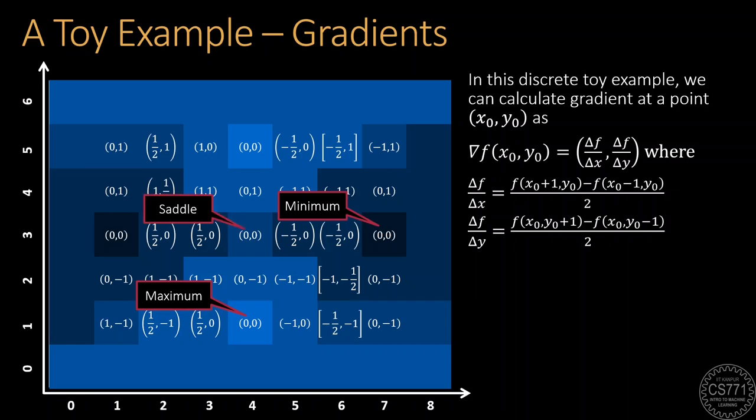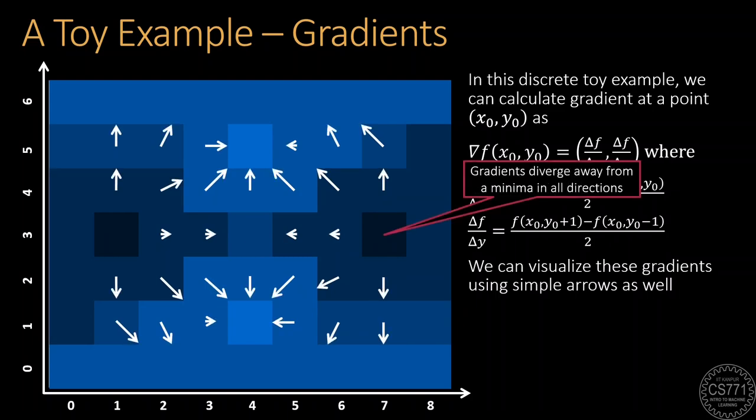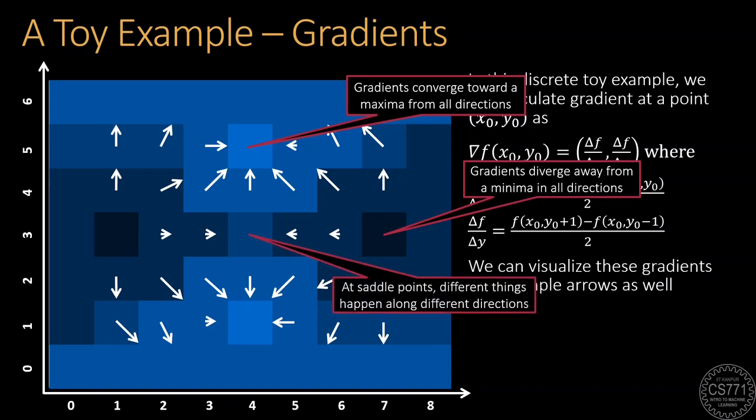To understand this better, let us plot the gradient at each point using arrows with the length of the arrow indicating the magnitude of the gradient. If we do this, then we find that gradients diverge away from minima, they diverge toward the maxima as expected. At saddle points, there is no consistent behavior.